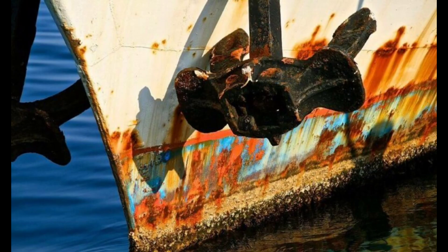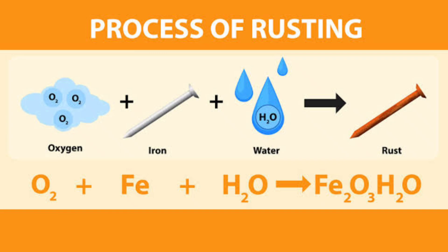So how does corrosion take place on ships? Ships are made of steel whose main component is iron. Iron is an electrochemically positive element and has a tendency to give up electrons to become free ions.